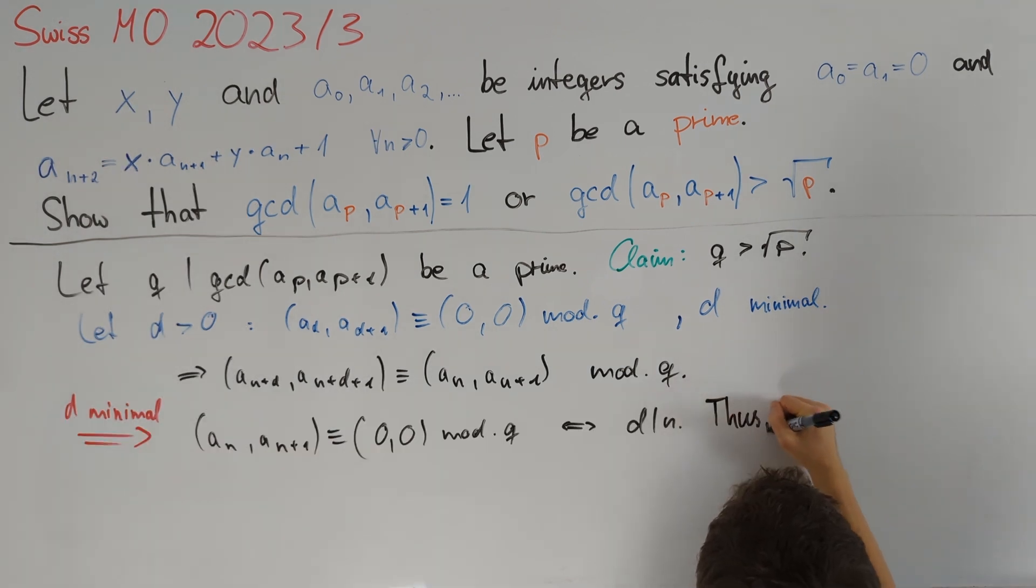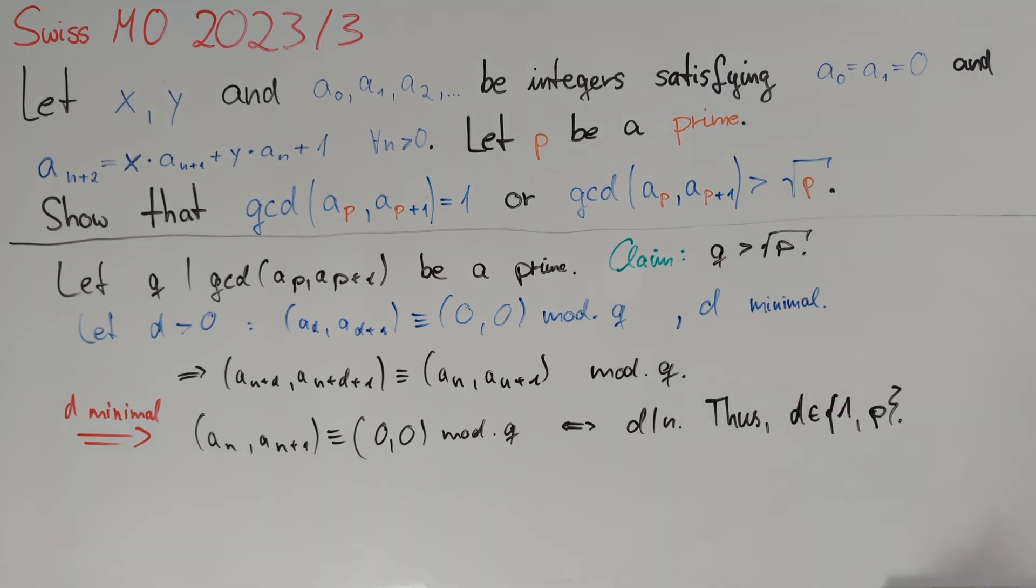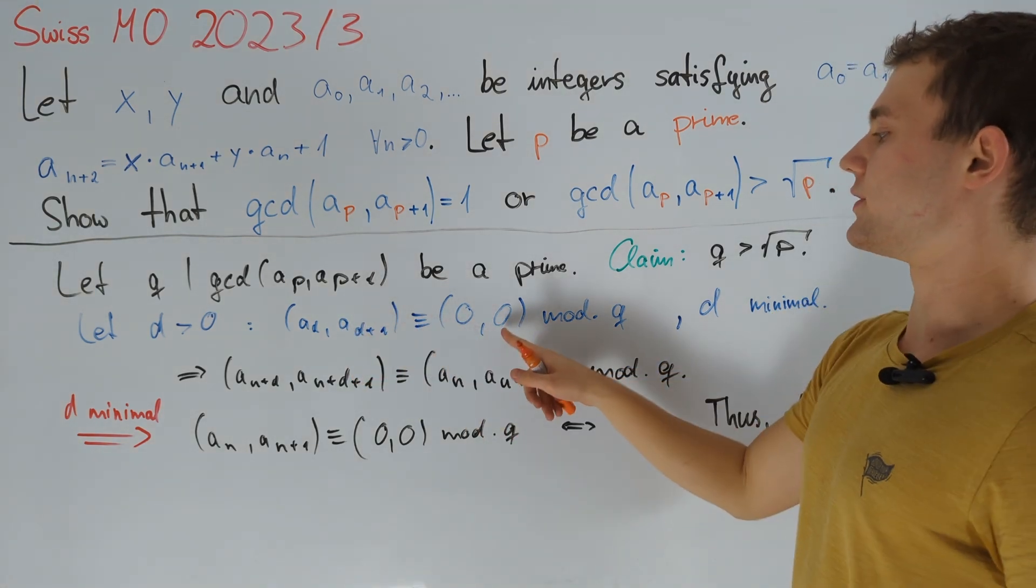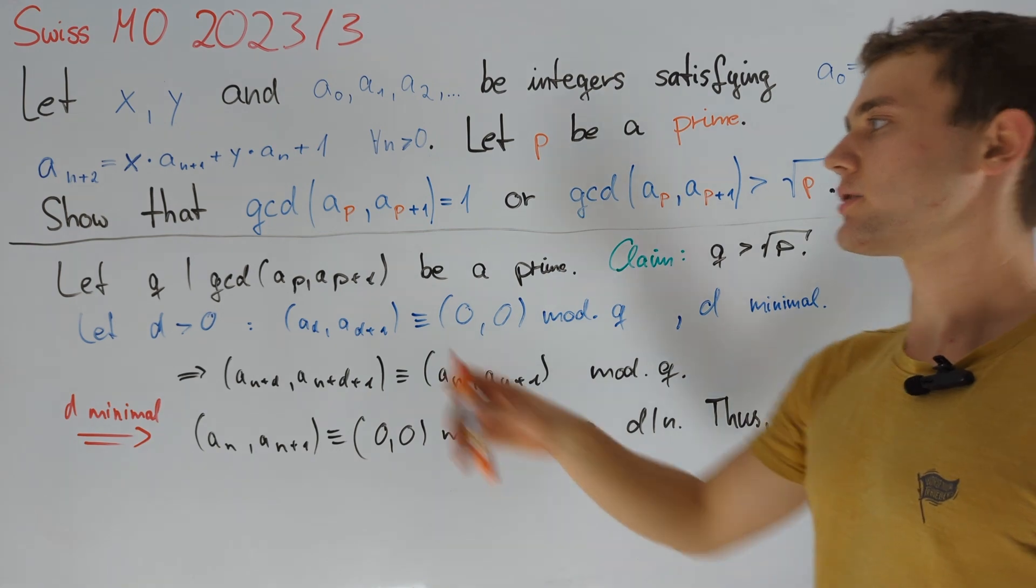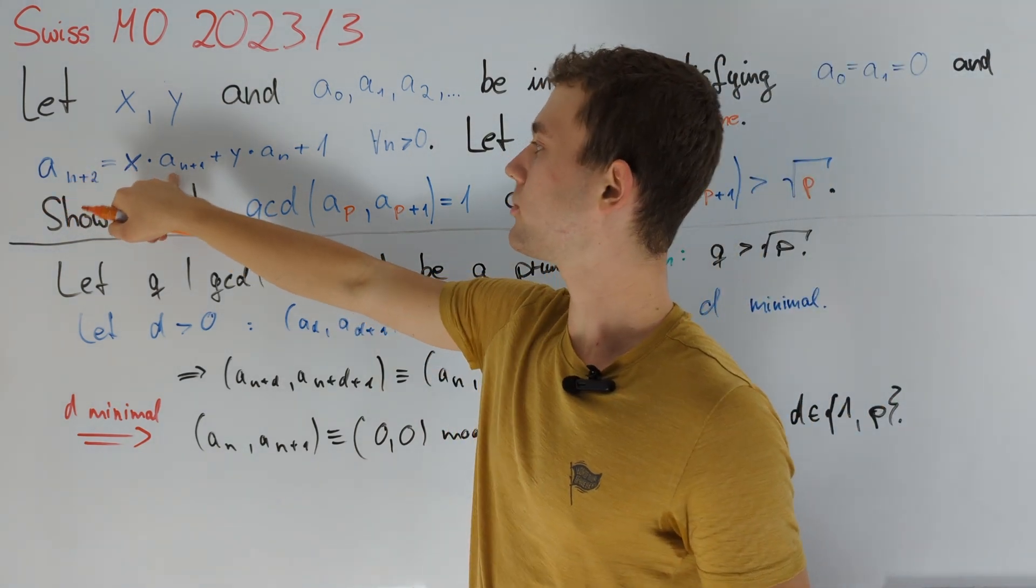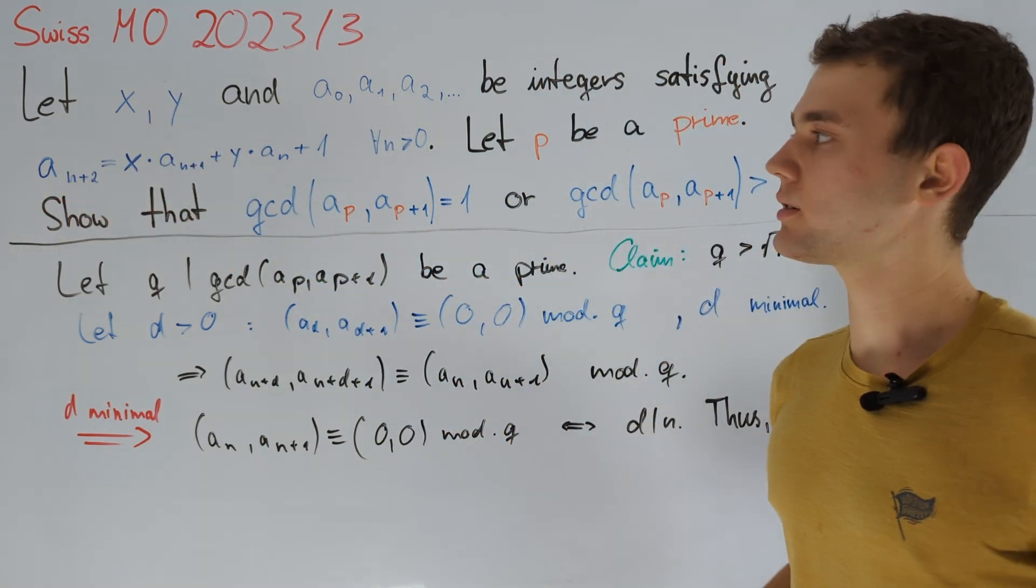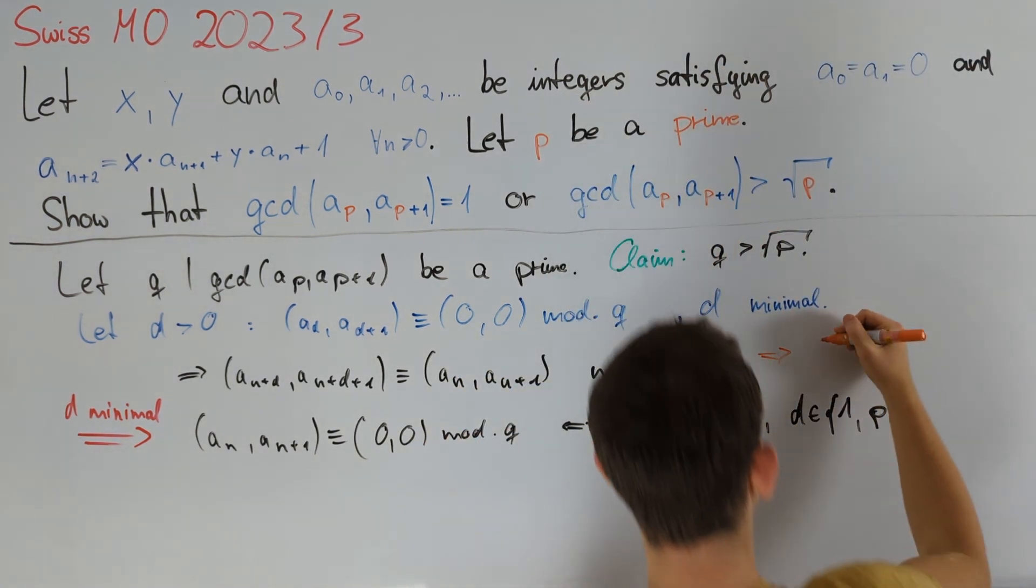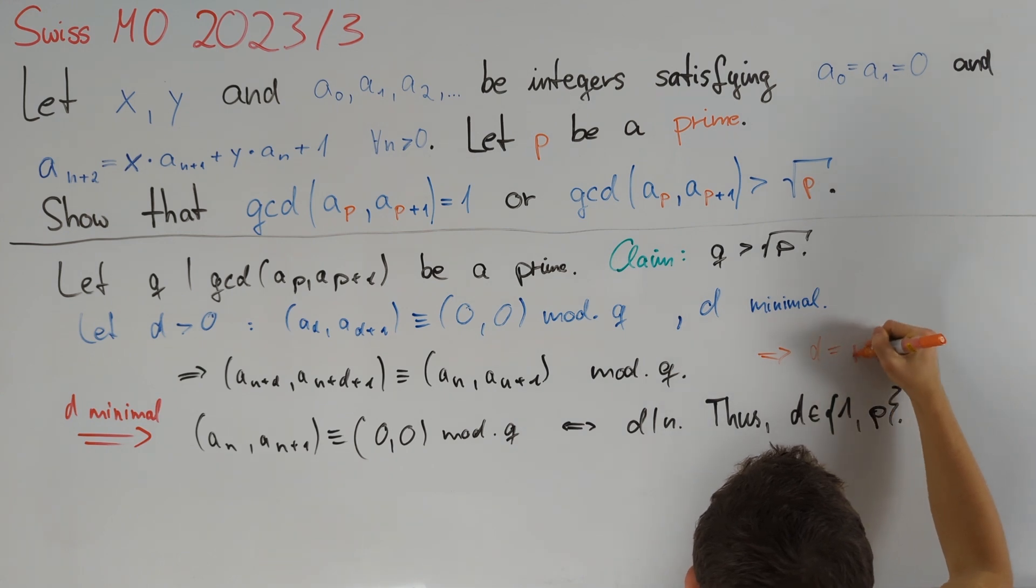Thus, d divides p and since p is a prime number this tells us that d is equal to 1 or p. Taking a look at the definition of d, d equals 1 tells us that a₂ must be divisible by q but a₂ is equal to x times 0 plus y times 0 plus 1 which is clearly not divisible by q and therefore we conclude that d equals p.